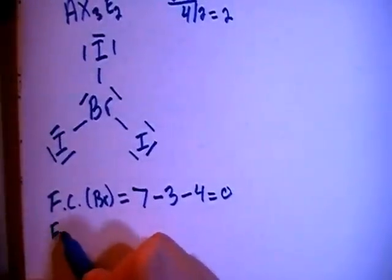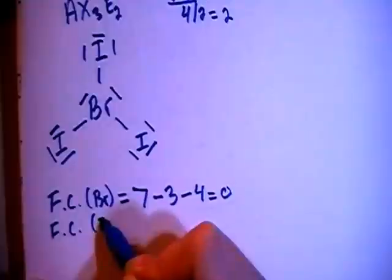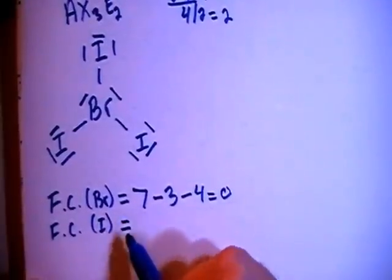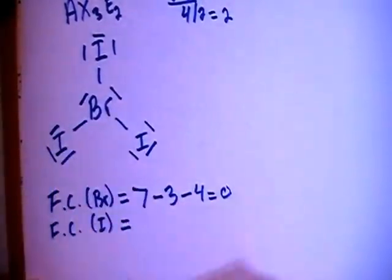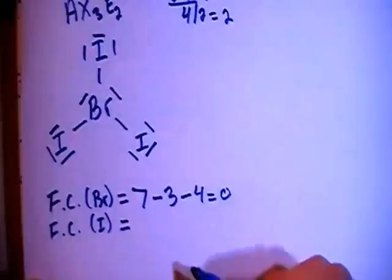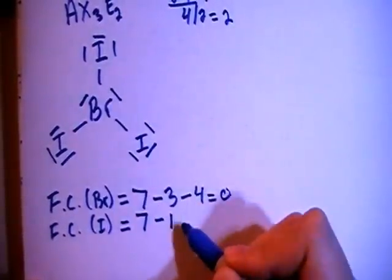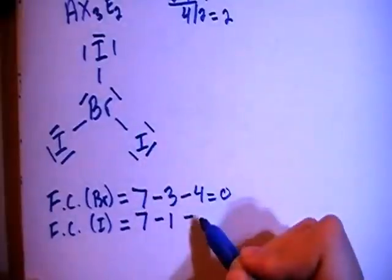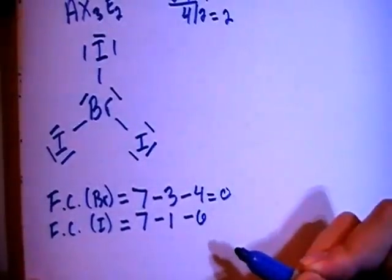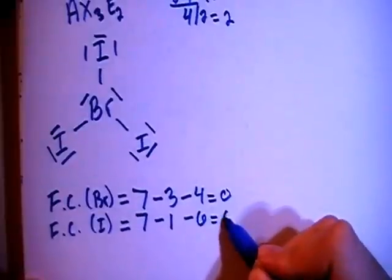And then the formal charge on each of the iodines. And notice that they all have the same setup, so they're all going to have the same formal charge. So that's 7 valence brought in for each one, minus a single bond on each iodine, minus 2, 4, 6 non-bonding electrons on each iodine for a formal charge of 0.